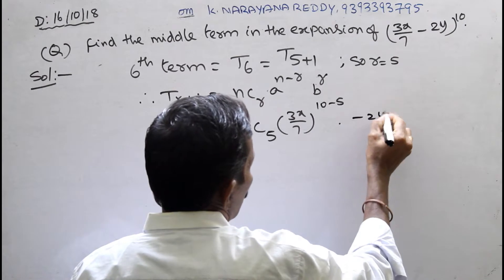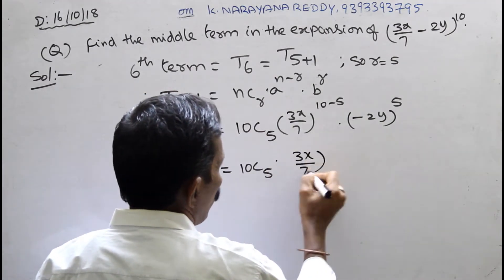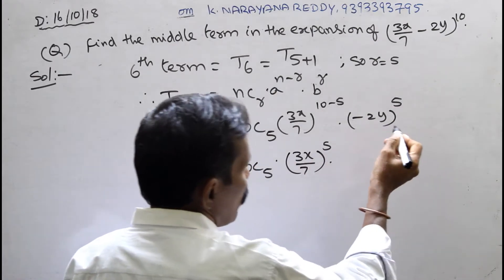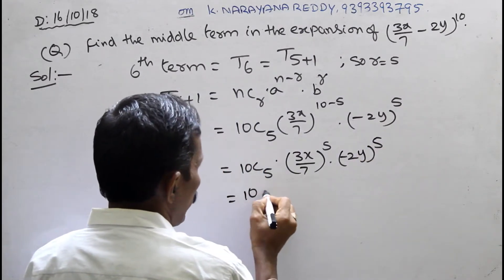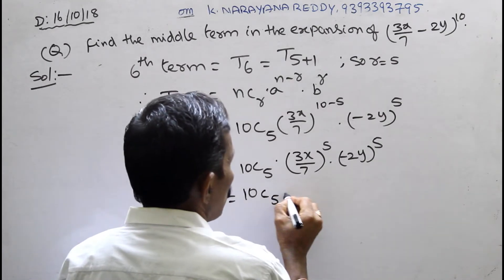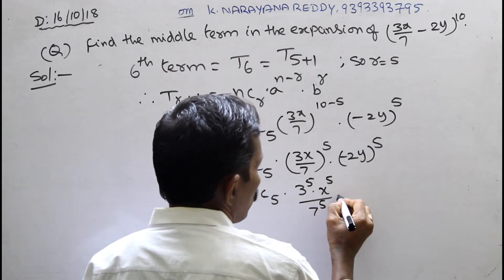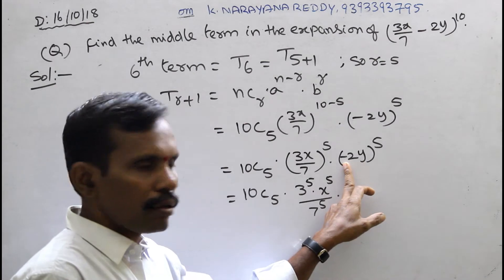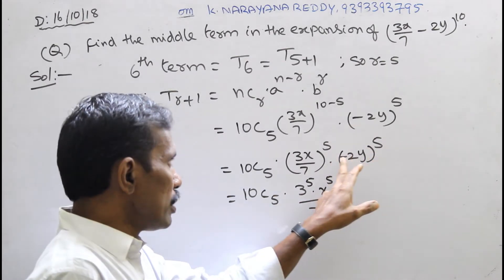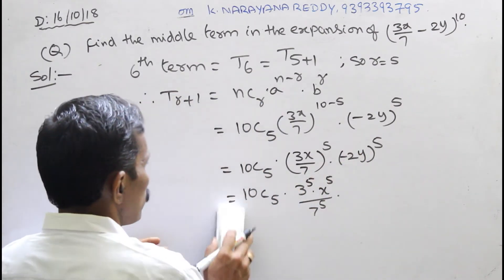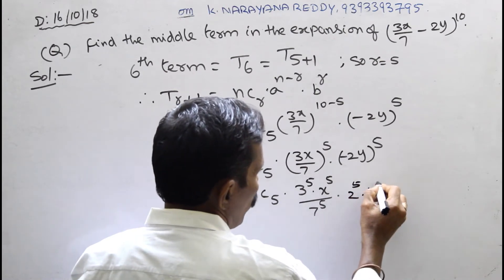That gives us 10C5 · (3x/7)^5 · (2y)^5. Since the minus sign is present and the exponent is odd, the sign becomes minus. So this value is negative: = −10C5 · 3^5 · x^5 / 7^5 · 2^5 · y^5.